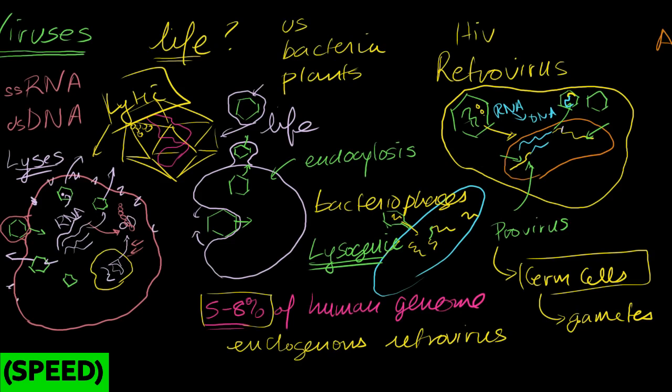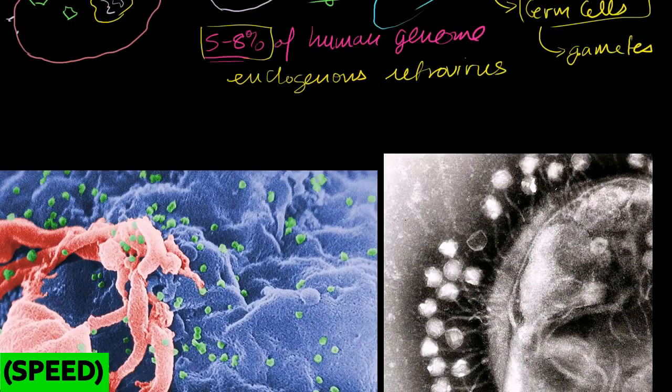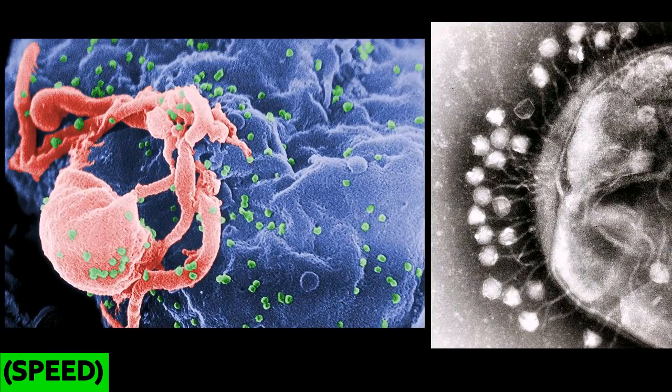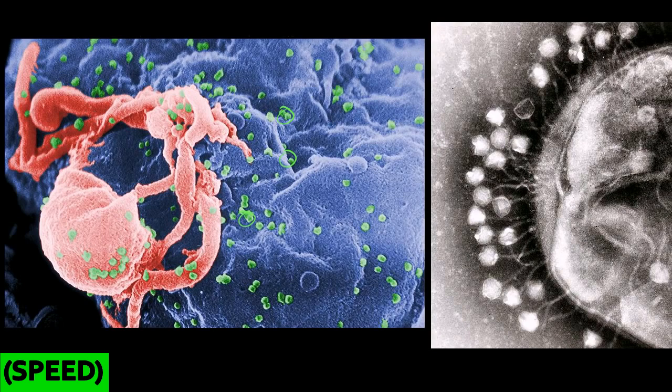But just to kind of give you an idea of what this looks like, right here, I got these two pictures from Wikipedia, one is from the CDC. These little green dots, and this was colored, the original picture was in black and white. These little green dots you see all over the surface. This big thing you see here is a white blood cell, part of the human immune system.